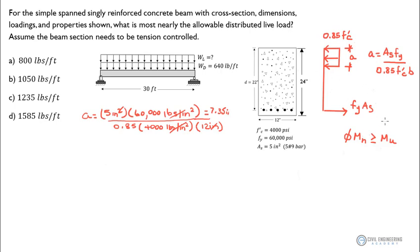For flexure for a tension-controlled section, which is what we're producing here, our strength reduction factor phi equals 0.9. You can look that up in your reference manual. So now we've got the depth of the stress block, we know our phi factor, and we know our underlying strength design equation that we need to work with.